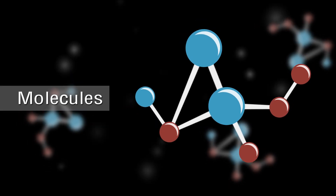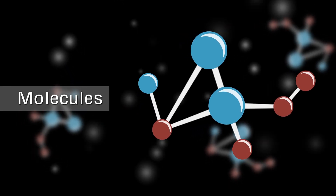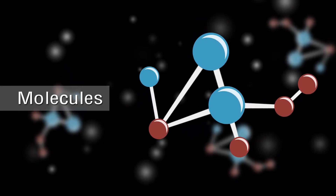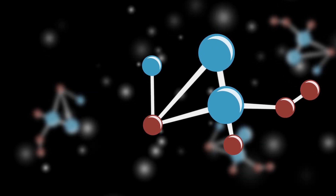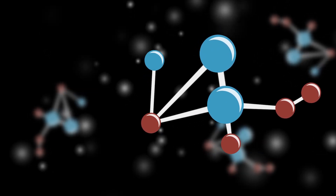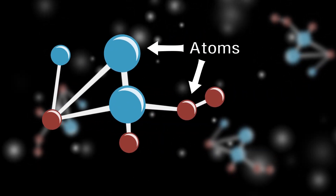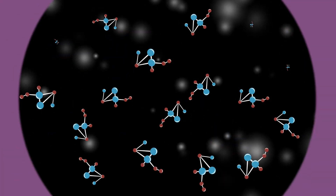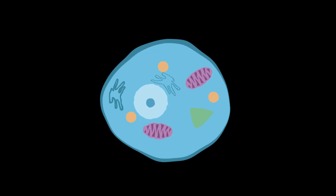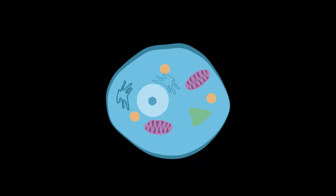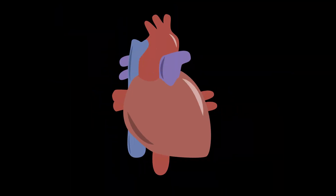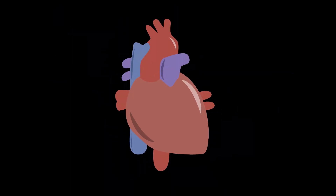Molecules are the last stop on this journey through the different levels of biological organization. A molecule is a chemical structure consisting of two or more units called atoms. Within each mitochondrion we can see millions of molecules organized into a system that helps produce energy for the cell.